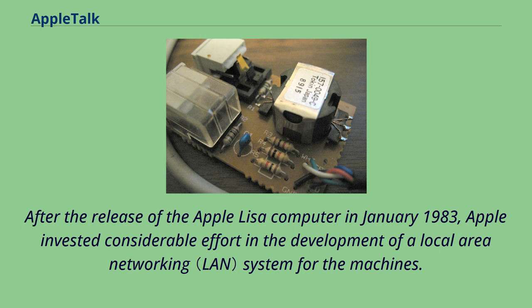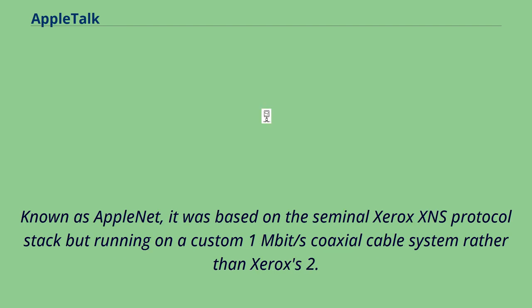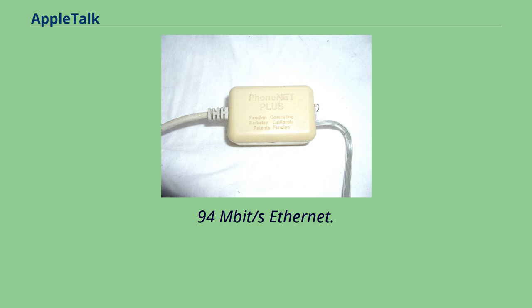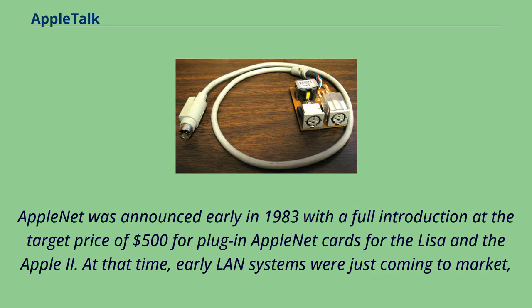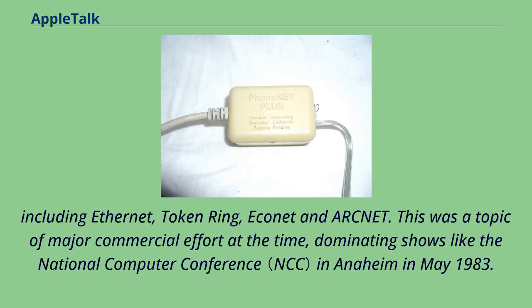After the release of the Apple Lisa computer in January 1983, Apple invested considerable effort in the development of a local area networking system. Known as AppleNet, it was based on the seminal Xerox XNS protocol stack but running on a custom 1 Mbps coaxial cable system rather than Xerox's 2.94 Mbps Ethernet. AppleNet was announced early in 1983 at a target price of $500 for plug-in AppleNet cards for the Lisa and the Apple II. At that time, early LAN systems were just coming to market, including Ethernet, Token Ring, Econet and Arcnet.